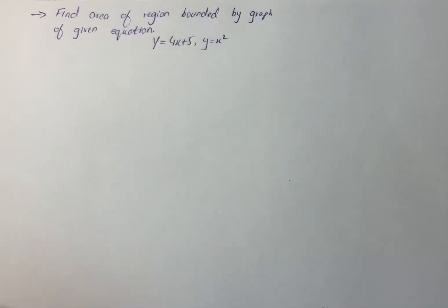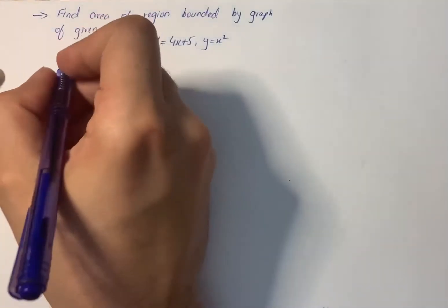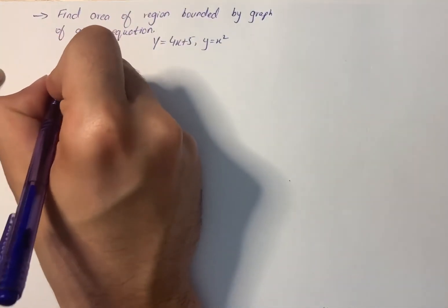The question says find area of region bounded by graph of given equation. The equations are y equals 4x plus 5 and y equals x squared. So, given curves: